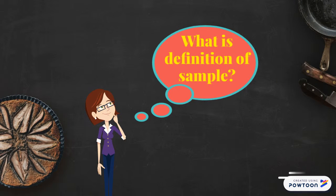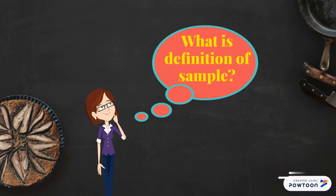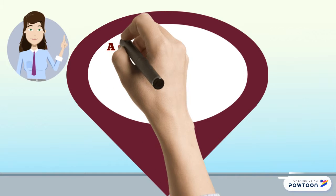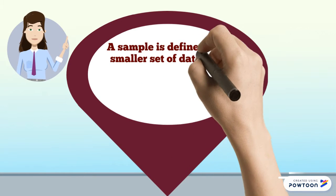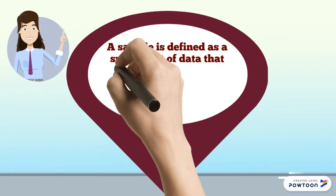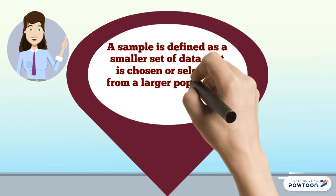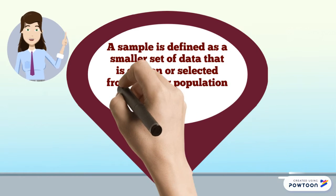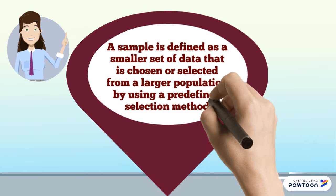What's the meaning of sample? A sample is defined as a smaller set of data that is chosen or selected from a larger population by using a predefined selection method.